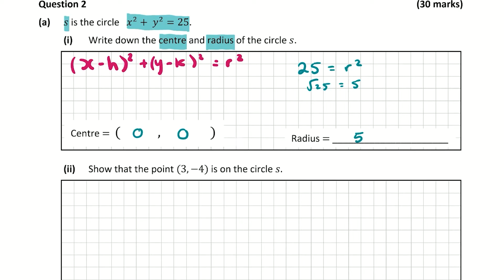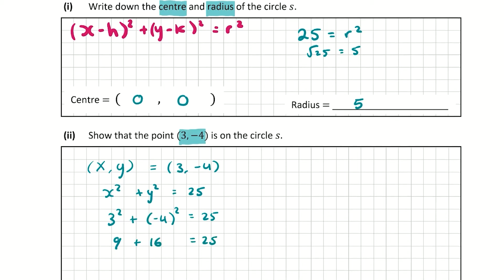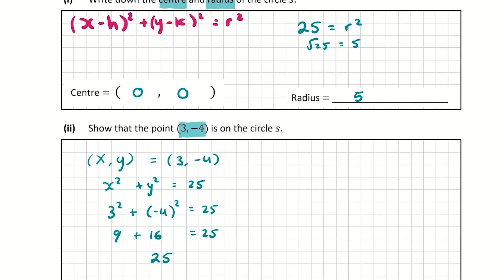Now we want to show that the point (3, -4) is on the circle S. So let's fill that in for (x, y) = (3, -4). We have x² + y² = 25, so 3² + (-4)² = 9 + 16 = 25. So 25 = 25 — we've verified that that point is on the circle.